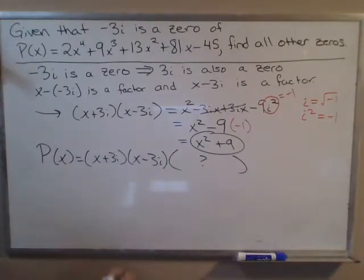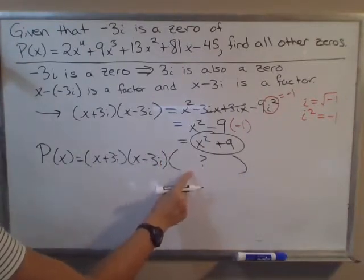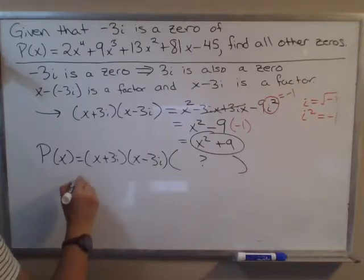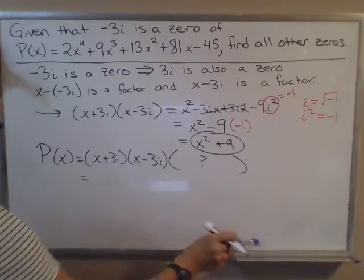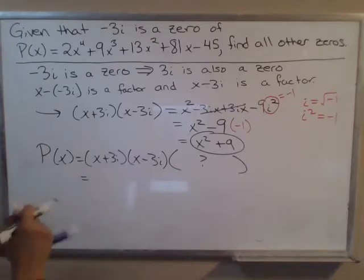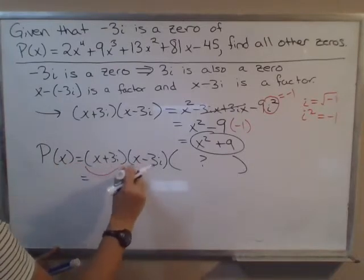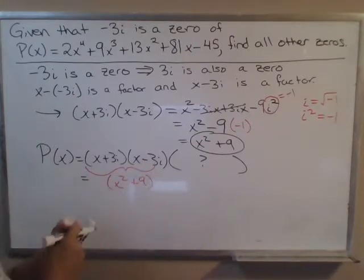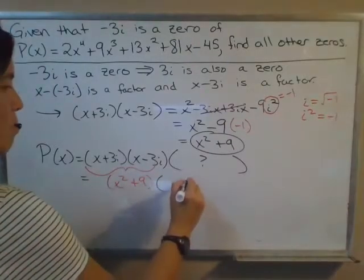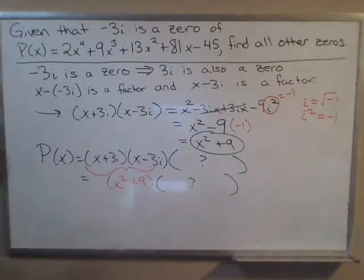We could go ahead and multiply these guys, which we just did. We showed that x + 3i times x - 3i equals x^2 + 9 times some mystery polynomial here.